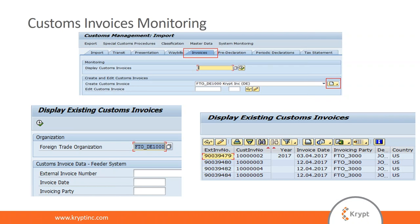You also have the possibility to manually create customs invoices directly in GTS. In this case, you'll be given a blank template invoice that needs to be completed directly in GTS — similar to the creation of a manual declaration in GTS, a function that's been in GTS since the beginning.